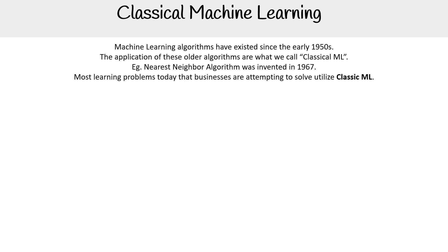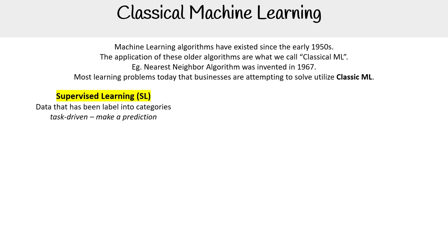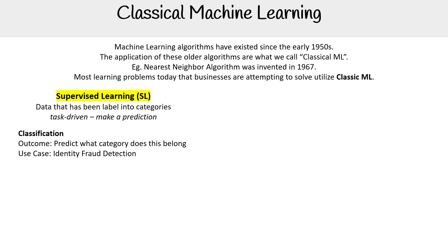Let's talk about supervised learning. This is where we have data that has been labeled into categories, and it's great when we are doing something that is task-driven — we're trying to make a prediction. We have this labeled data, and we can bring in unlabeled data and tell the machine to label it. Here we have classification, where the outcome is to predict what category something belongs to. A use case here would be identity fraud detection.